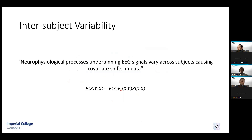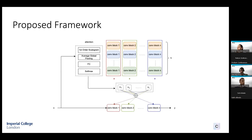In this work, we focus mainly on the challenge of subject distribution shift, or inter-subject variability. We can see it through the factorization as a shift in the probability of Z given Y. It is a neurophysiological process that underpins the EEG signals that vary across subjects, causing covariate shift across data.